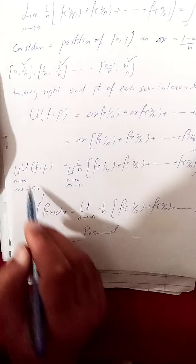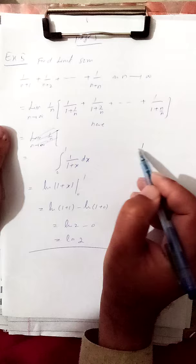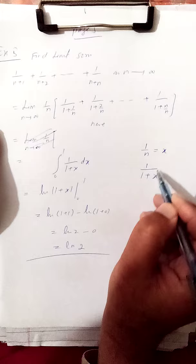By this limit of sum method, we solve this example: find the limit of the sum 1/(n+1) + 1/(n+2) + ... + 1/(n+n) as n tends to infinity. This equals the limit as n tends to infinity of (1/n)·[1/(1 + 1/n) + 1/(1 + 2/n) + ... + 1/(1 + n/n)]. Recognizing that if we put 1/n equal to x, then each term becomes 1/(1+x), so this series by the previous definition equals the integral from 0 to 1 of 1/(1+x) dx.